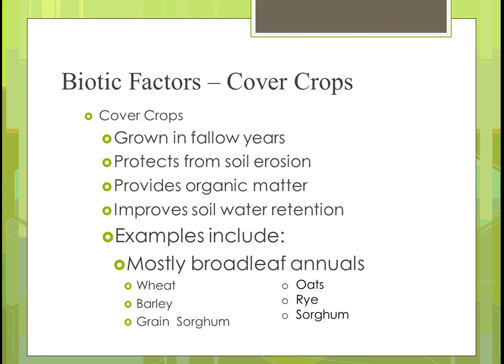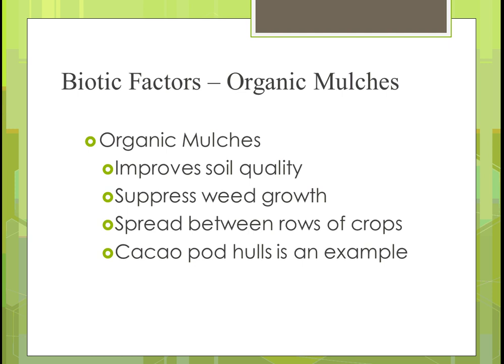Some examples of broadleaf annuals used as cover crops include wheat, barley, sorghum, oats, and rye. For organic mulches, any addition of mulch — such as the chaff from the crop from the year before left on the ground after harvest — improves soil quality and reduces soil exposure, meaning less weed growth. You can spread it between rows of crops. In some places, cocoa hulls are used to create that organic mulch; it covers the soil and eventually deteriorates to become a good mulch.